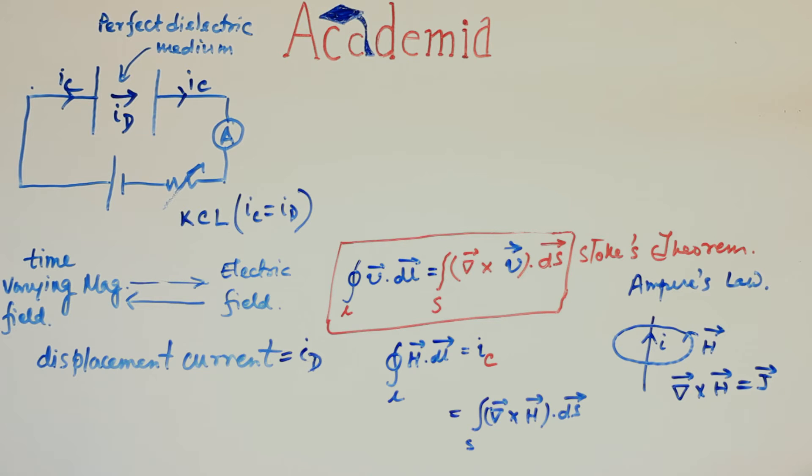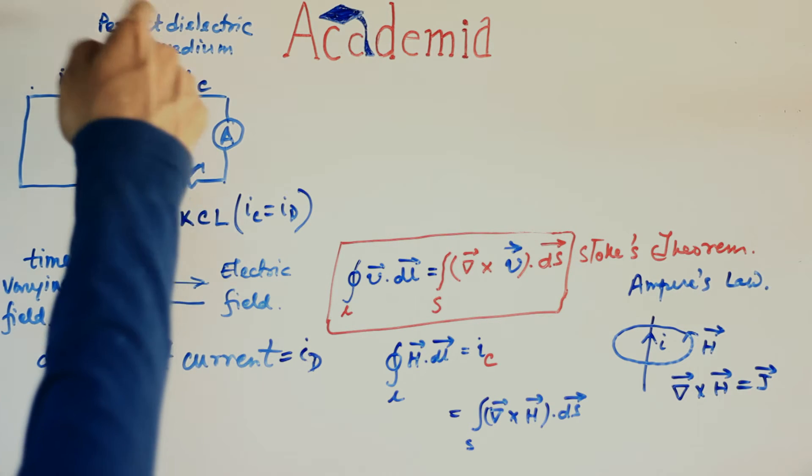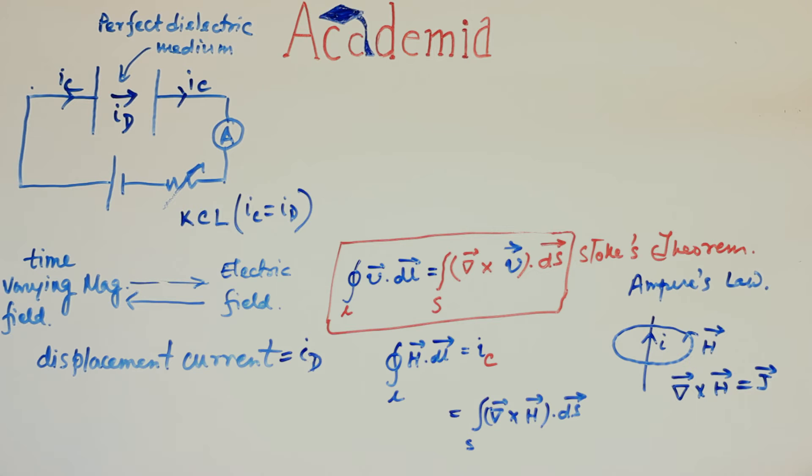Long long time after Maxwell proposed his modification, experiment showed the presence of magnetic field in the neighborhood of this free dielectric space. Ampere's law suggests that there must be flow of electric current in this free space to support the production of magnetic field.